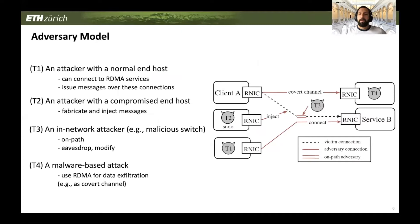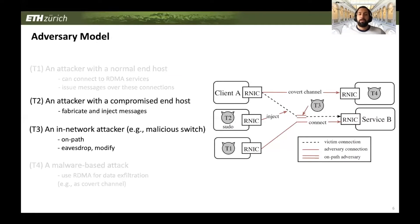In this talk, we focus on attacker models T2 and T3. T2 sits on a compromised end host and can fabricate and inject messages into existing connections. Attacker T3 is an in-network attacker sitting somewhere in the network, for example on a switch, and can eavesdrop on and modify bypassing packets.